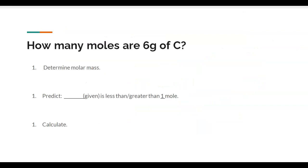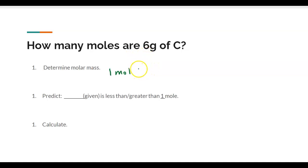Here we have a question: how many moles are in 6 grams of carbon? Step one is always to find the molar mass. I look at my periodic table, find carbon — element number 6 — and recognize that one mol of carbon equals 12.01 grams of carbon. I found that on the periodic table.